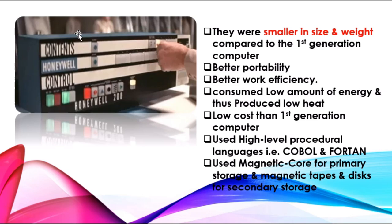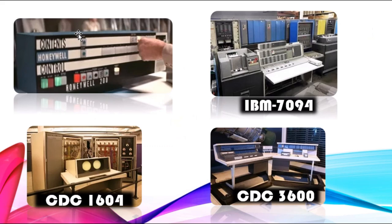For secondary storage, second generation computers used magnetic disks and tapes. Some disadvantages included the requirement of a large cooling system due to high heat production, constant maintenance, and being used only for specific purposes. Examples of this generation include the Honeywell 400, the IBM 7094, the CDC 1604, the CDC 3600, the UNIVAC 1108, and many others.